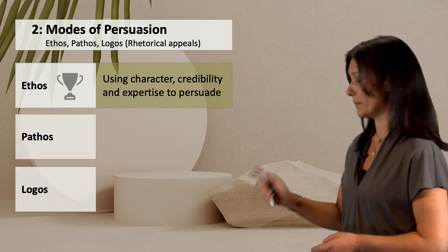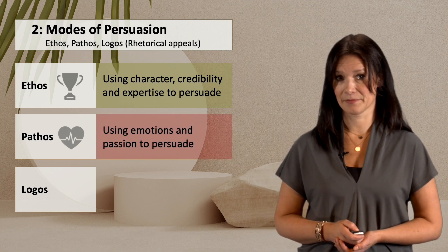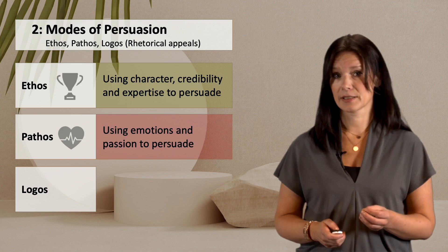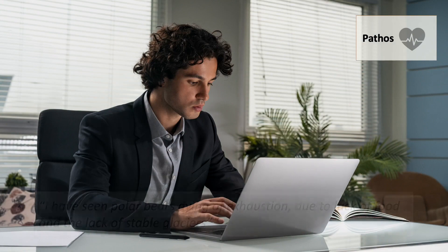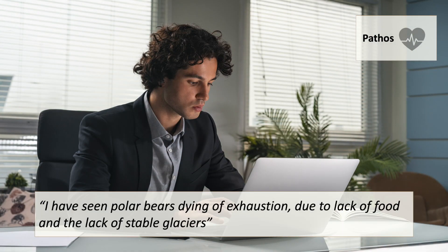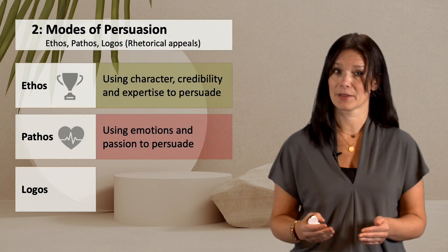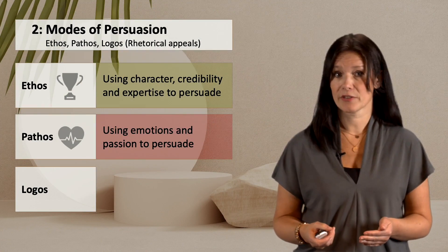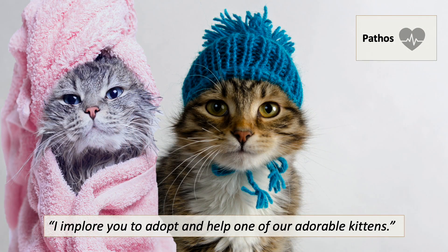The next mode is pathos. This is when the author uses emotions or passion to persuade the reader, and the goal is to convince by evoking an emotional response. An example would be: 'I have seen polar bears dying of exhaustion due to lack of food and the lack of stable glaciers.' Often adding a picture would add to the emotional response in an article or commercial. Keep in mind that pathos will not only evoke pity or grief — often writers will evoke positive feelings and emotions through warm descriptions and stories of joy.